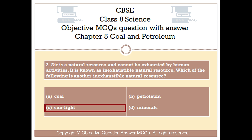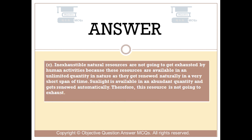The right answer is Option C. Inexhaustible natural resources are not going to get exhausted by human activities, because these resources are available in an unlimited quantity in nature, as they get renewed naturally in a very short span of time. Sunlight is available in abundant quantity and gets renewed automatically; therefore, this resource is not going to exhaust.